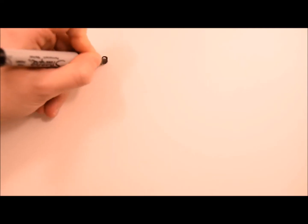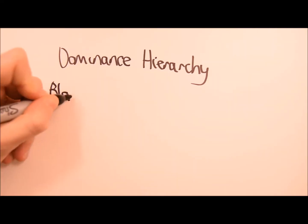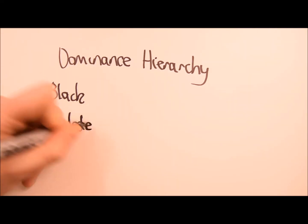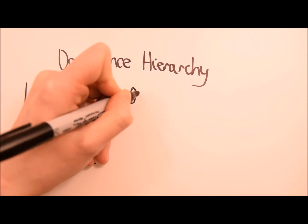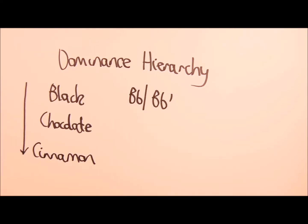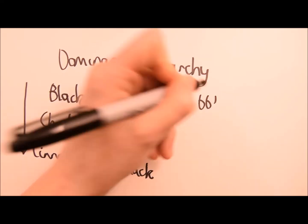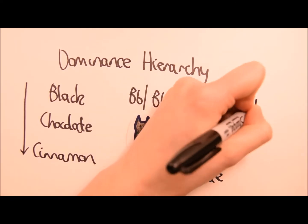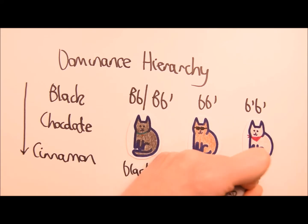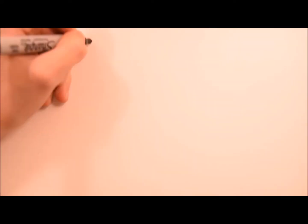These exist in a dominance hierarchy which goes black, chocolate, cinnamon. So if a cat had one copy of the black gene, the coat would be black. If a cat had one chocolate and one cinnamon allele, the coat would be chocolate. A cinnamon colour cat would be homozygous recessive.